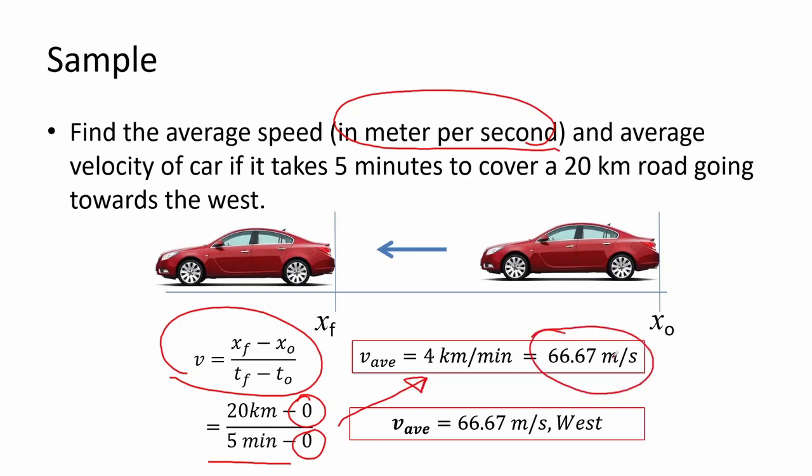Therefore, its average speed is 66.67 meters per second and its average velocity is 66.67 meters per second moving west.